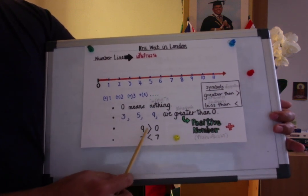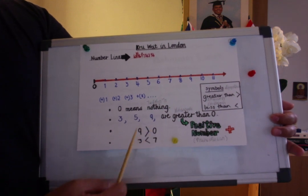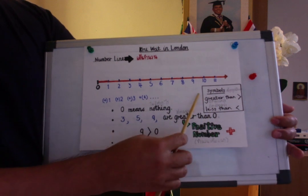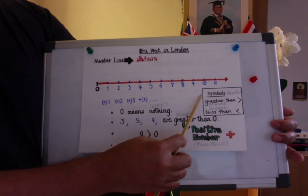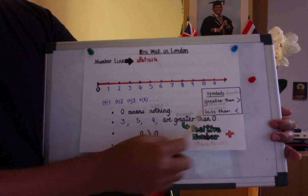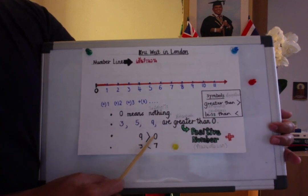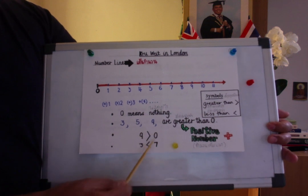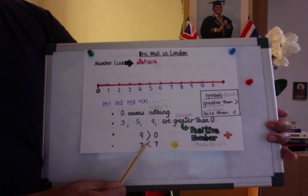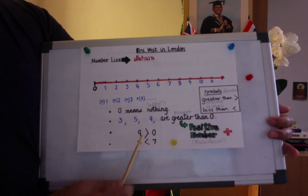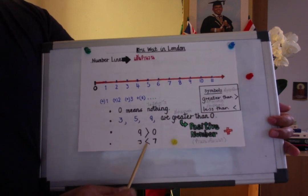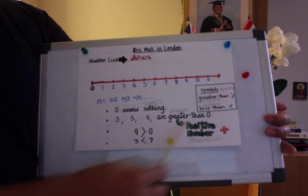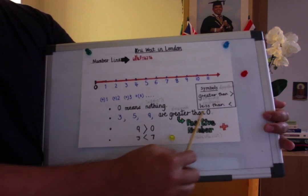For example, 9 is greater than 0, and 3 is less than 7. We are going to look at the symbols here. Greater than uses this symbol — the value in front is greater than the value behind. Less than: the number 3 has a value less than 7, meaning 7 has a greater value than 3. You need to learn about numbers like positive numbers and greater than or less than.